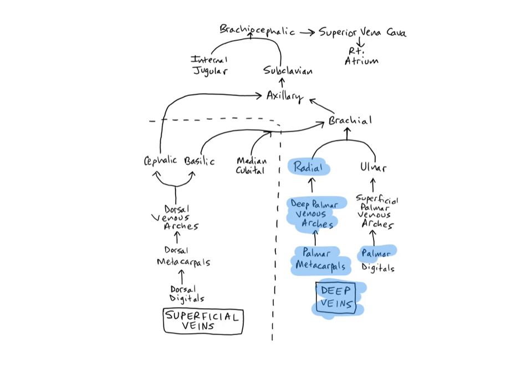The palmar digital veins drain blood from the fingers into the superficial palmar venous arches, which empty into the ulnar veins. The ulnars run along the medial aspect of the forearms and join the radial veins to form the brachial veins. The ulnars drain the muscles, bones, and skin of the hand and muscles of the medial aspect of the forearm.